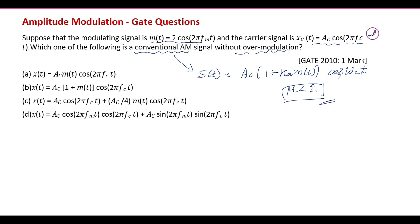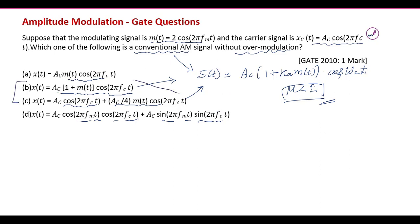We compare this general equation with all given options. Option A — A_C · m(t) · cos(2πF_C t) — resembles a double sideband suppressed carrier (DSBSC) case. Option B resembles the general AM equation. Option C is the expanded form of the general equation. Option D does not match the original form.